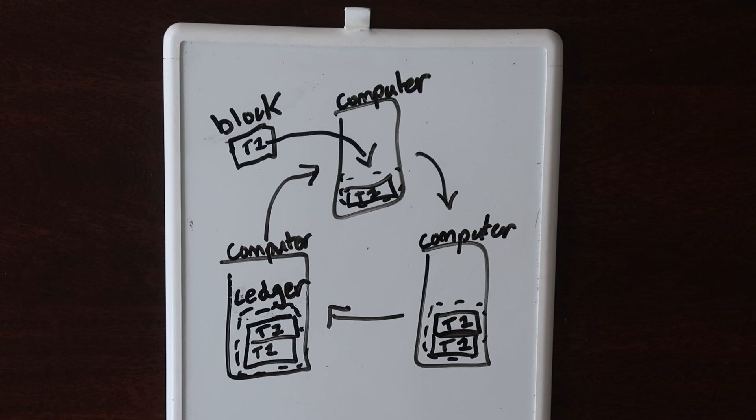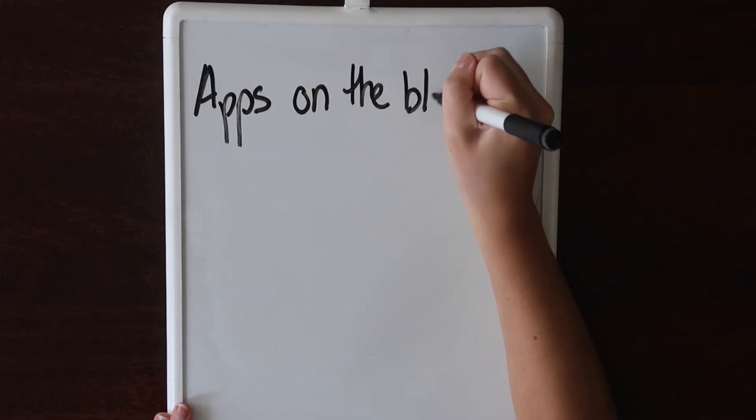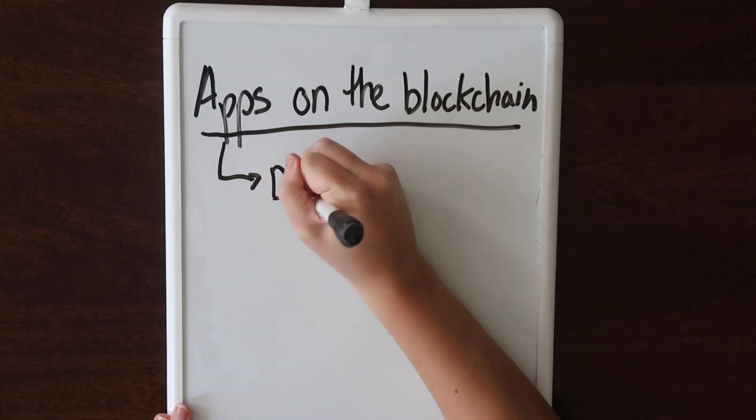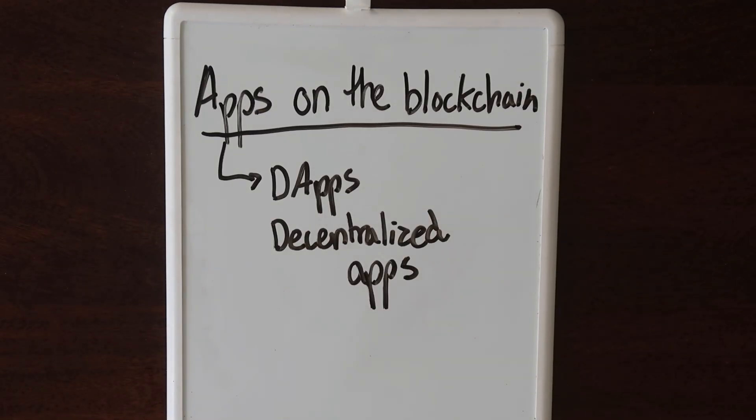Now, a transaction does not have to be a financial transaction. If you're familiar with data structures, a transaction is just like a change to your structure. Incrementing a counter, that can be a transaction. This means there are so many applications that can be built with blockchain technology. We call these decentralized applications, or dapps, because they do not have a central authority.